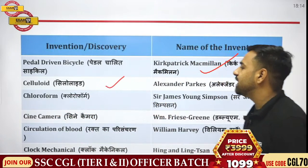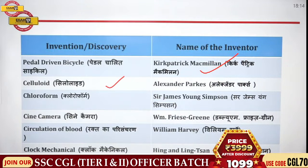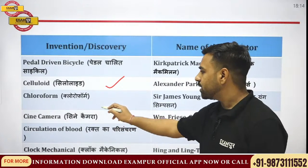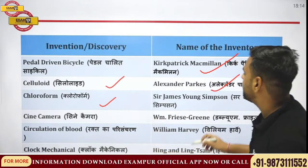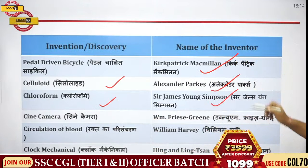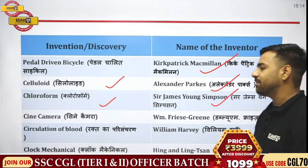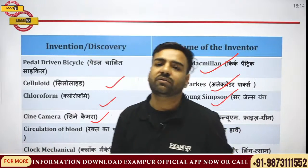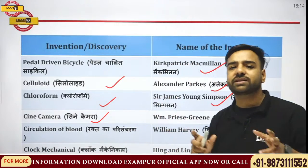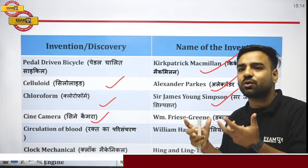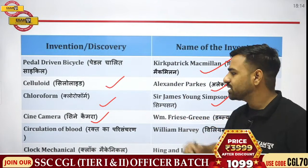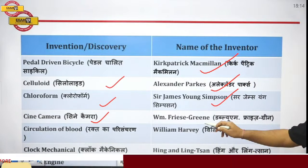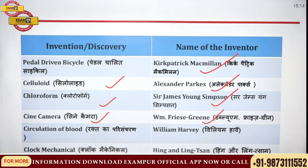Next, celluloid was discovered by Alexander Parks. Then, chloroform was discovered by Sir James Young Simpson. Then comes the cine camera — the camera used in cinematography for shooting movies — it was discovered by Lumière.